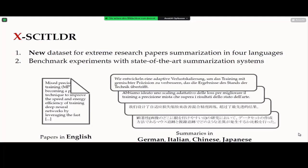The number of publications is increasing rapidly over the years, becoming a problem for us to keep up to date with current research. To mitigate this problem, there are some research paper summarization systems so we can consume information faster. However, there is a problem that those summarization systems only focus on English, not any other languages, which can be a problem for researchers like me who don't speak English natively.